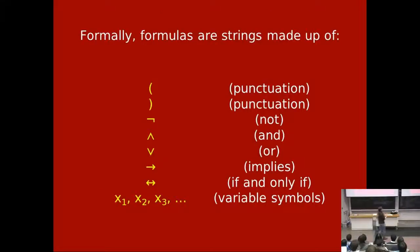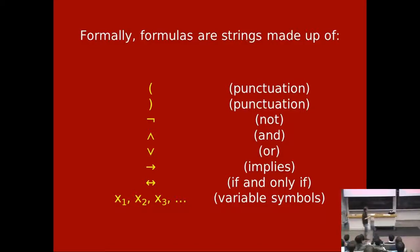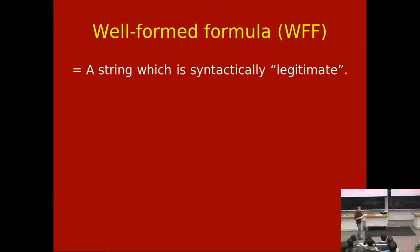Let's talk more formally about what propositional formulas are. Formally, they're just strings made up of symbols: parentheses as punctuation, five symbols for not, and, or, implies, and if-and-only-if, and variable symbols — usually lowercase letters, maybe with subscripts. Of course, not every string is a well-formed formula. A well-formed formula means a string which is syntactically legitimate. I'll first show you by example, then show you how to give a formal definition using induction.